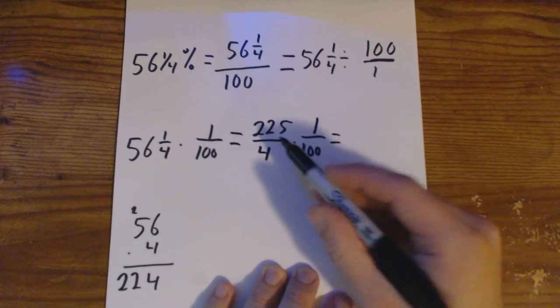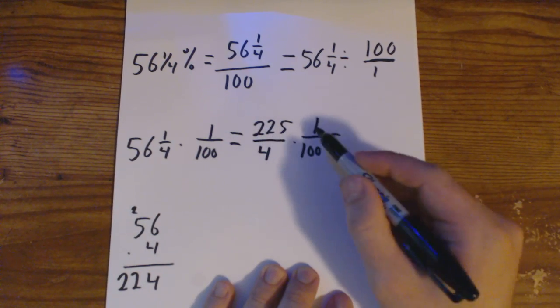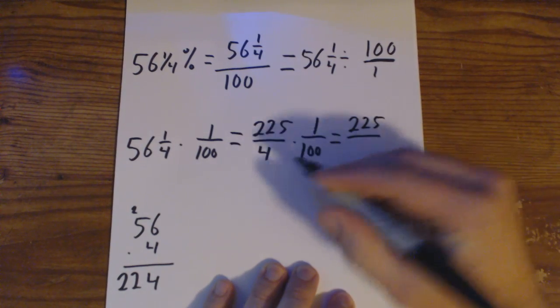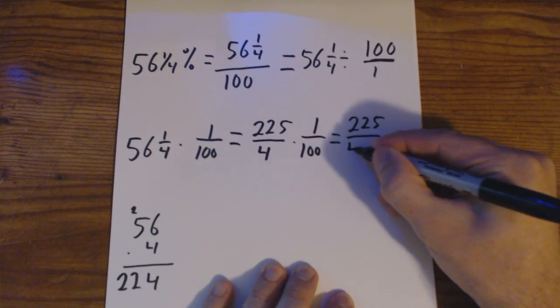Now we just multiply two fractions and we work our way across. 225 times 1 is going to be 225 over 4 times 100 is 400.